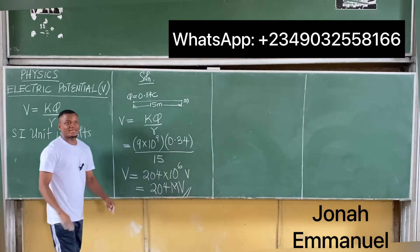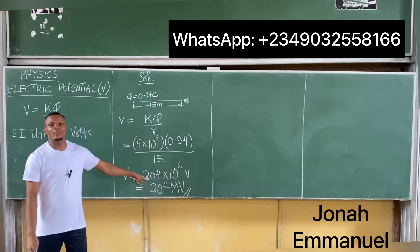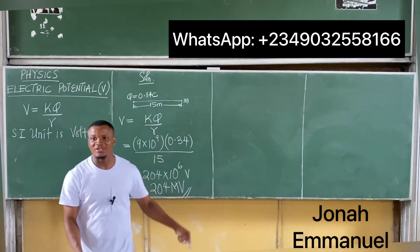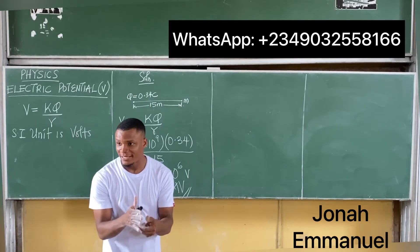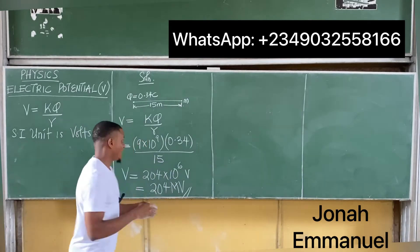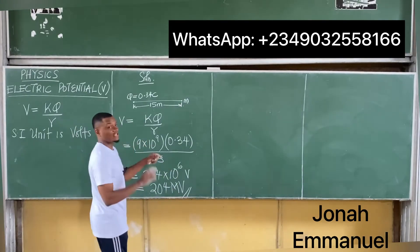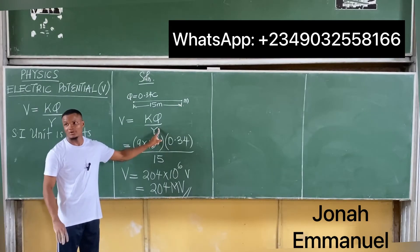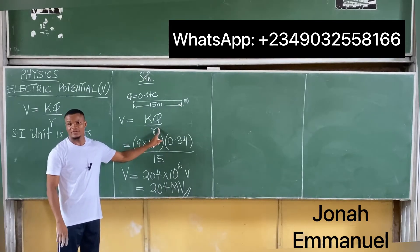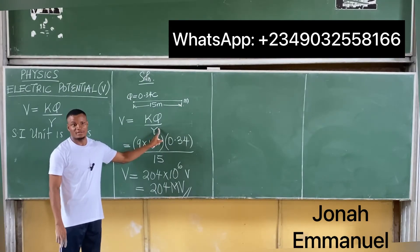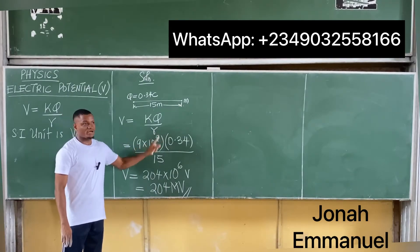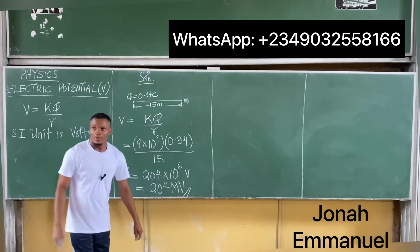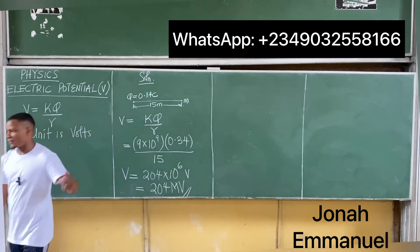Notice that electric potential and electric field are very similar. The only difference is that in the potential formula, distance is not squared — that's all.